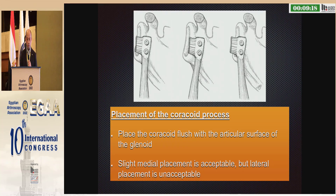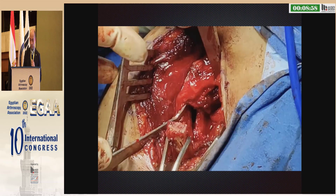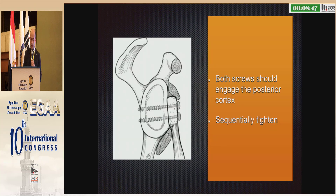After that, you will place the coracoid process flush with the articular surface of the glenoid. Slight medial placement is acceptable, but lateral placement is unacceptable. You have to carefully assess the surface to determine where you are going to place the coracoid process. You measure carefully, then drill the holes in the coracoid process, and place the screws so they engage the posterior cortex, tightening the top and bottom sequentially at the same time.